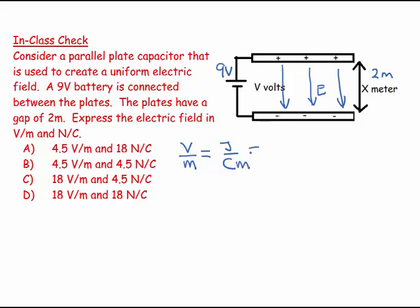We recall from before that a joule is work, so that is a force times distance, which would be newton meters over coulombs per meter, which gives us newtons per coulomb.